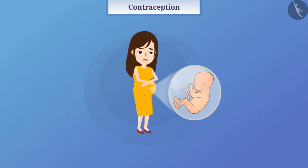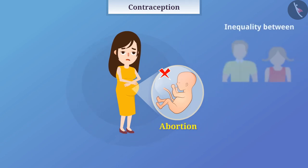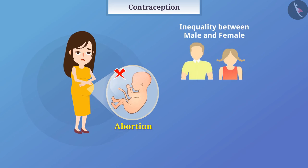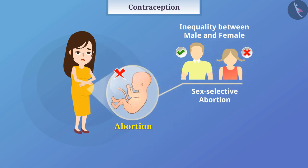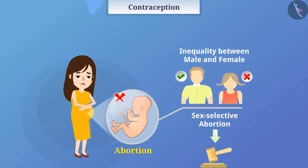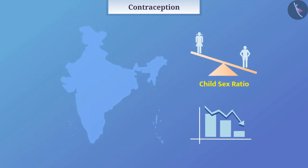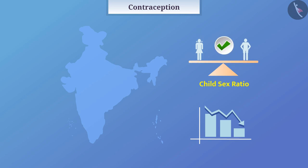Surgically, an unwanted fetus can also be removed from the uterus — this is called abortion. Due to inequality between male and female in society, some people perform sex-selective abortion of the female fetus after performing a test for determining the sex of the fetus. This is illegal. Due to this, the child sex ratio in our country is decreasing sharply. We need to maintain the male-female sex ratio for a healthy society.